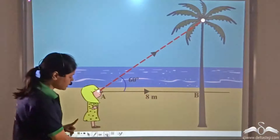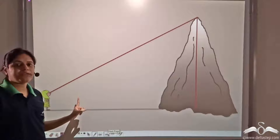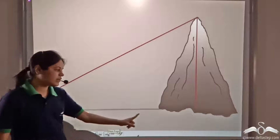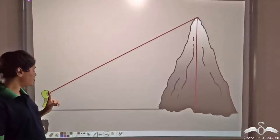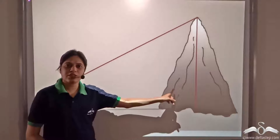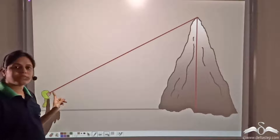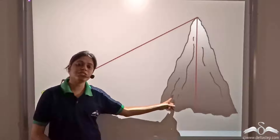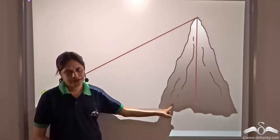Now, in the case of mountains, although we can measure the angle of elevation quite simply, it is very difficult to find the horizontal distance of the point of observation from the object, because this distance is huge and it is quite difficult to measure it.